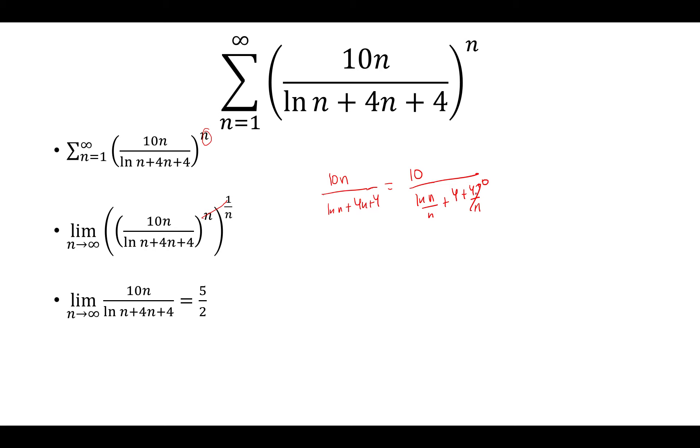4 over n goes to 0, and the natural log of n over n also goes to 0. And to prove that, we can use L'Hopital's rule.